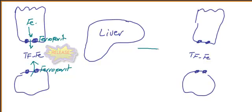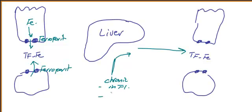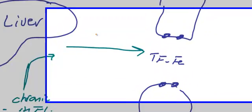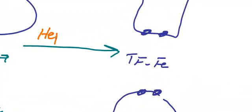If I have chronic inflammation or high iron, the liver will release a specific kind of protein or peptide called hepcidin.